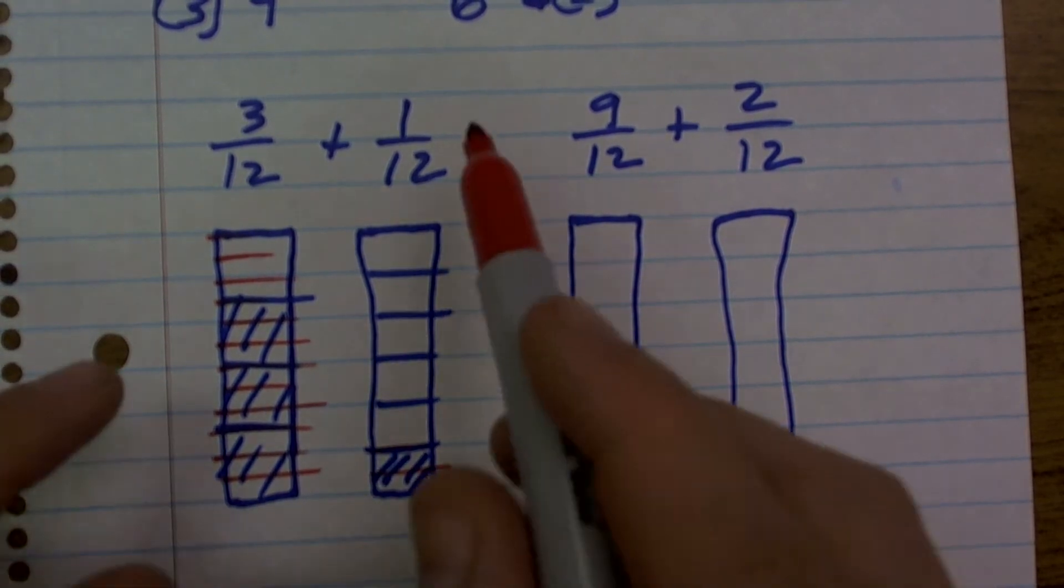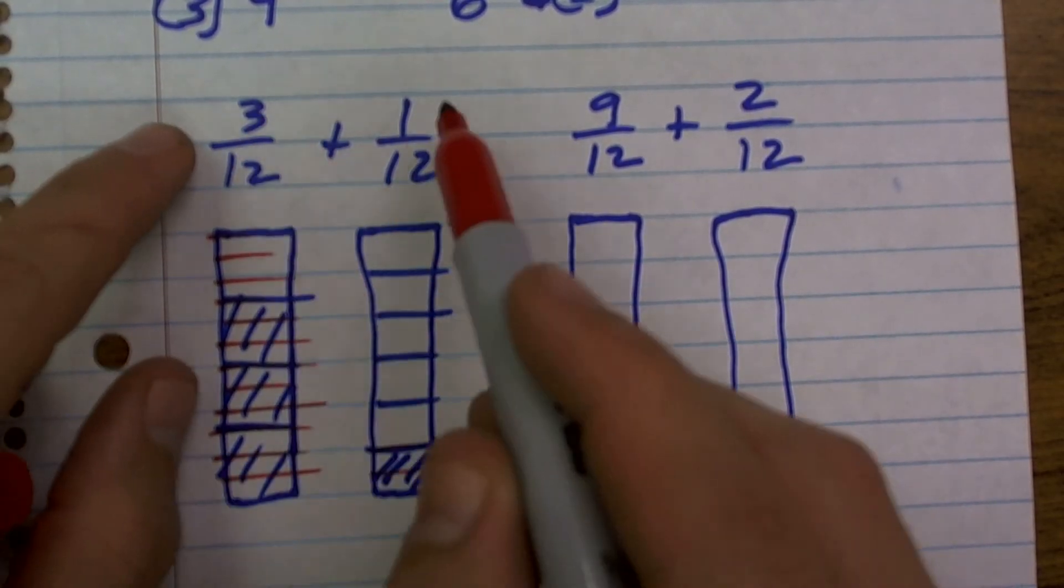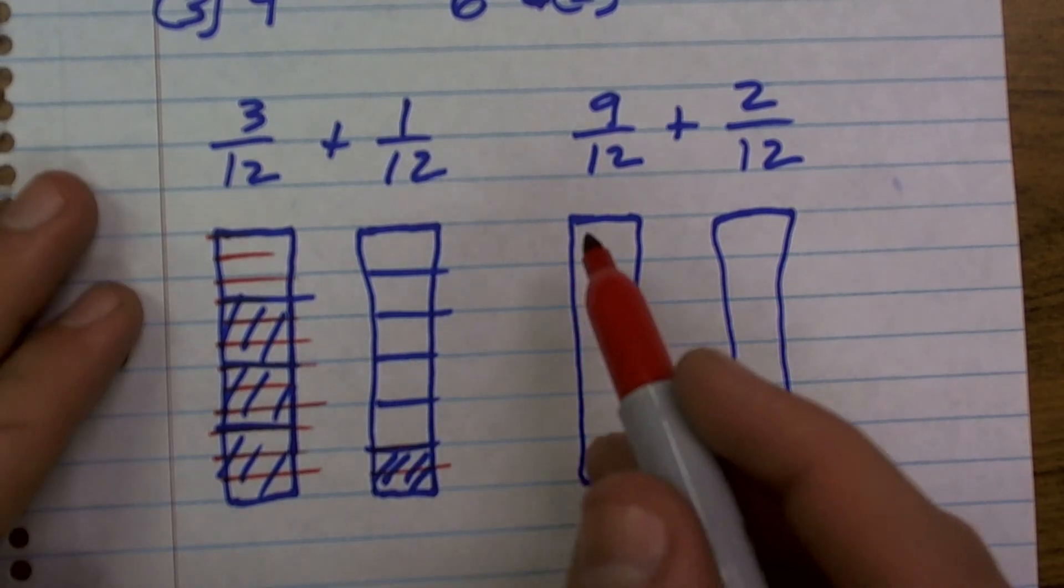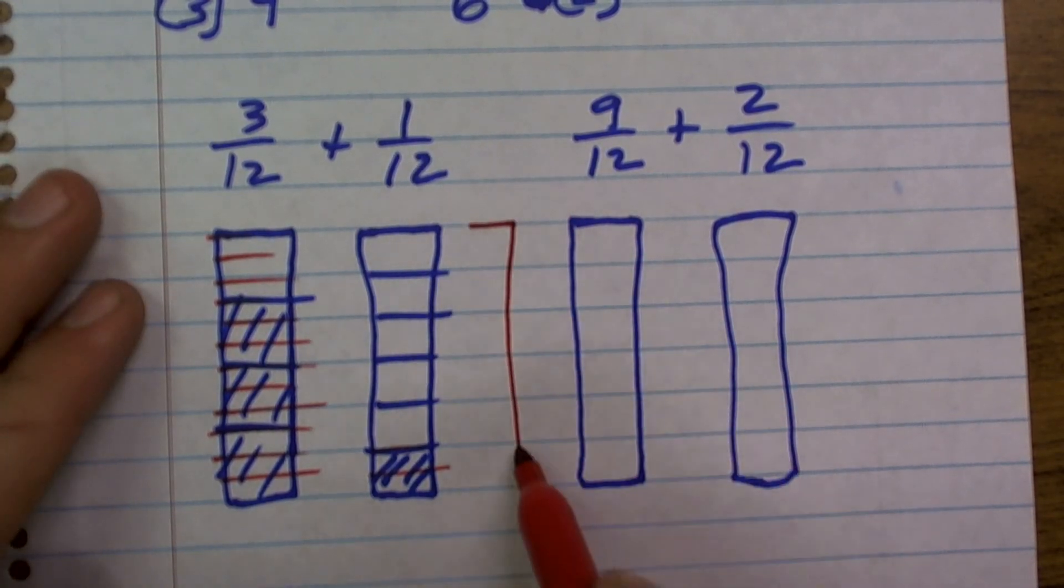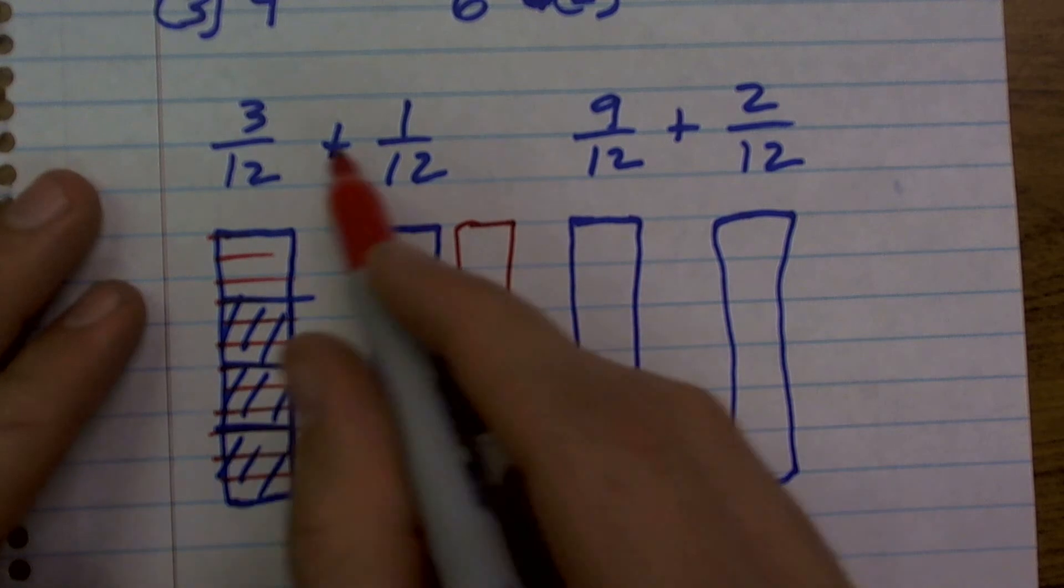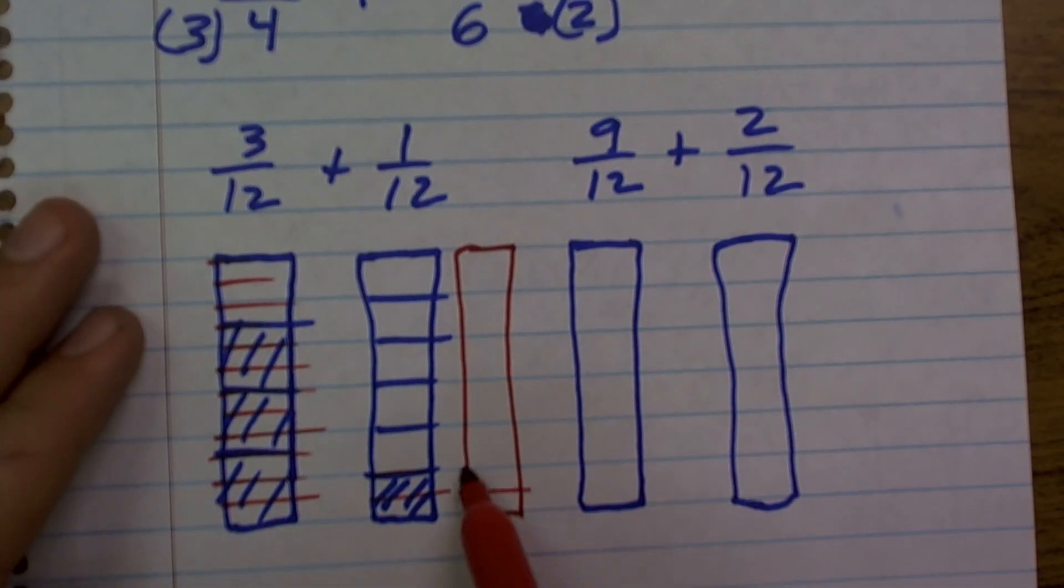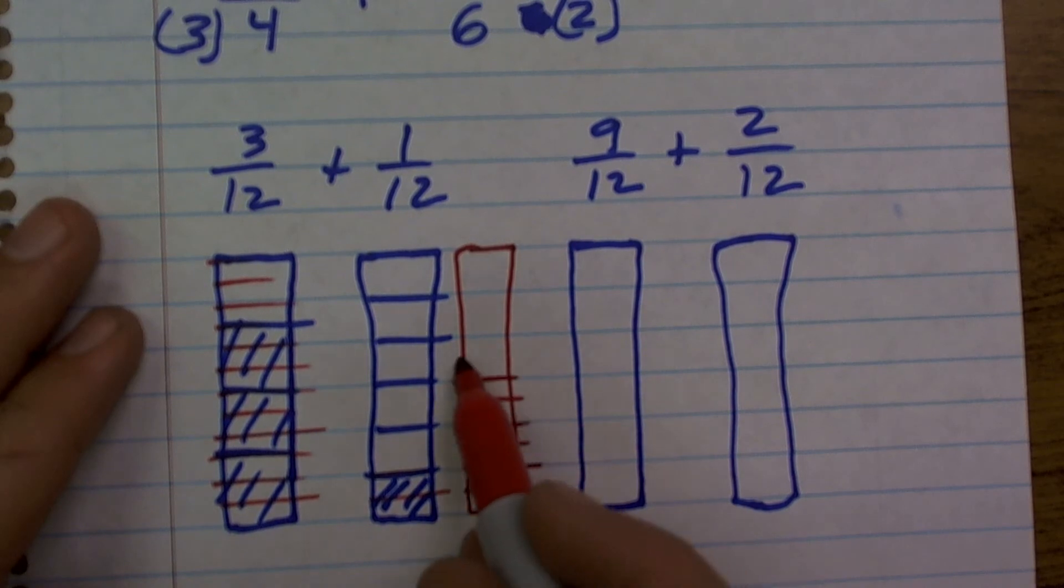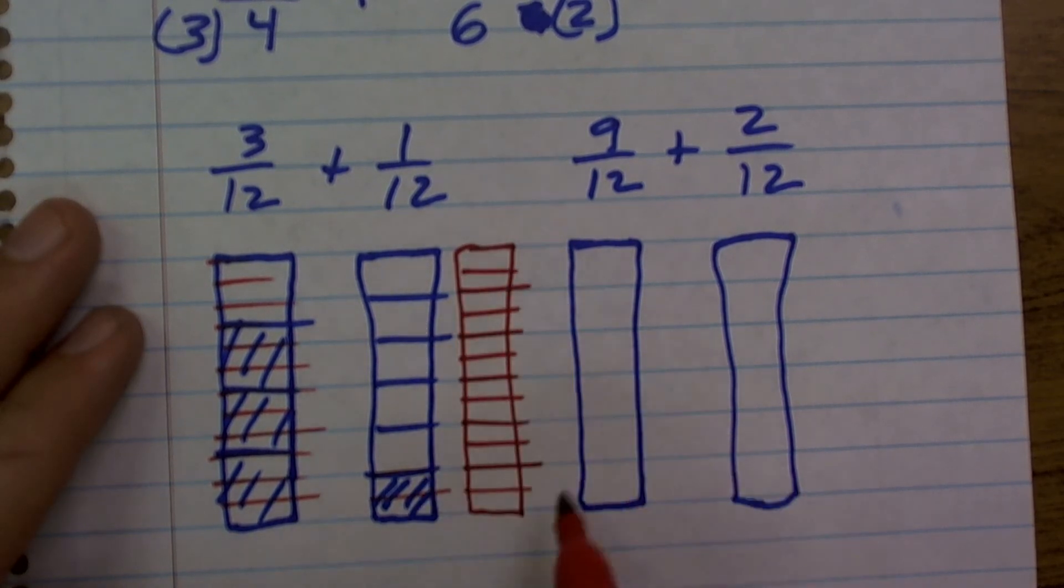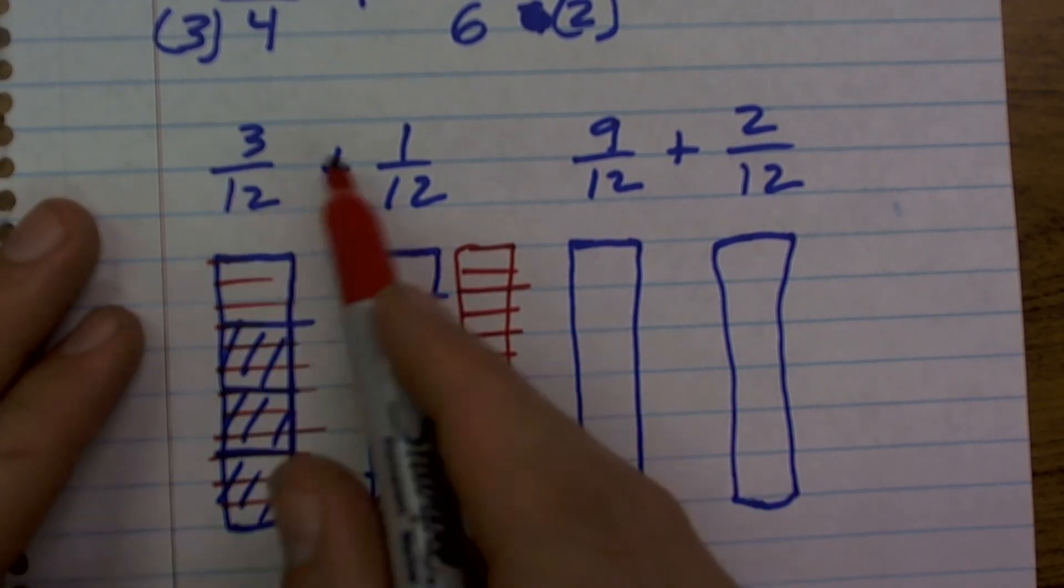So if I add what I'm adding originally, if you would have added 3 twelfths plus 1 twelfth, your answer, if you just multiplied the denominators and never changed the tops, your answer would have been in twelfths. Your answer would be 4 twelfths, 3 plus 1 is 4.